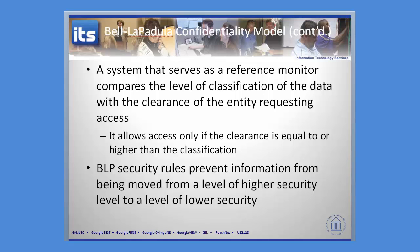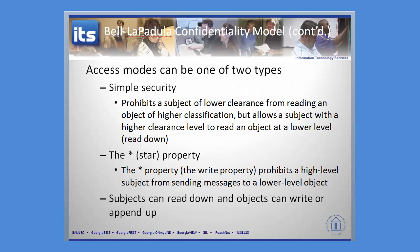In doing this, it had two different access modes. The first access mode was Simple Security. What this did is prohibit a subject with a lower security clearance from reading an object with a higher classification. But it did allow folks to read down — so if I've got a top secret clearance, I can read documents that are unclassified.